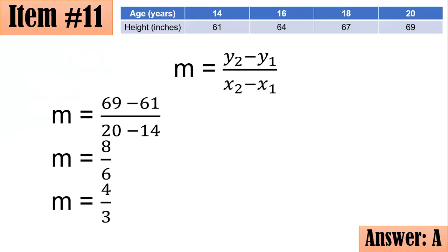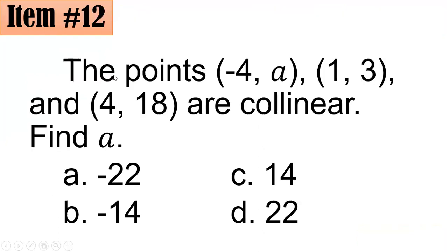Number 12: the points negative 4A, 1, 3, and 4, 18 are collinear. Find A. Did you go for negative 22, negative 14, 14, or 22?